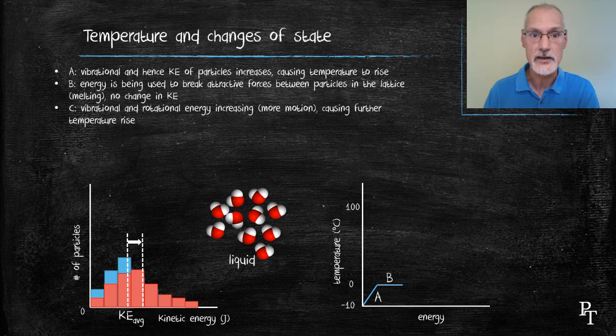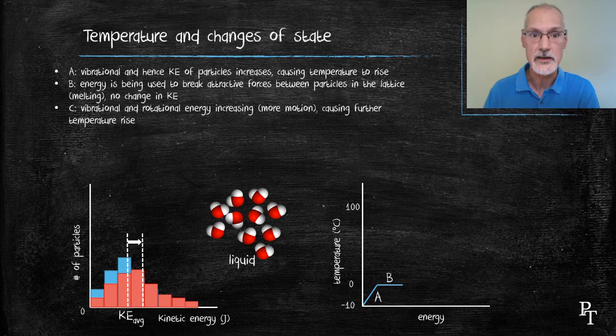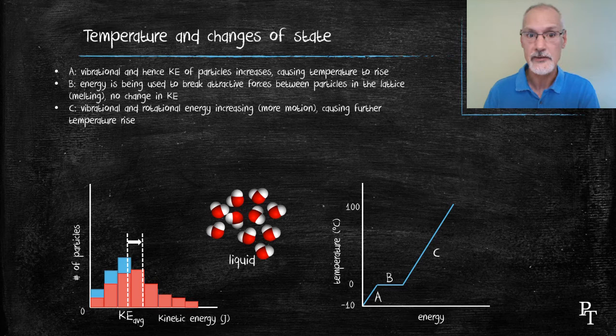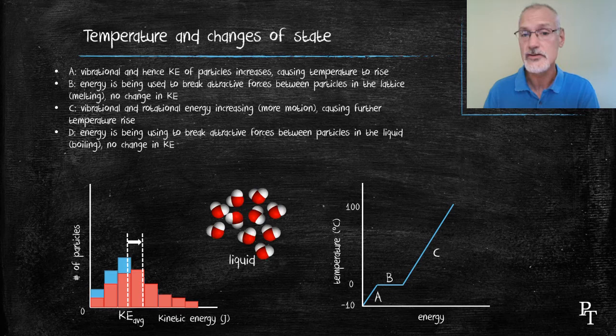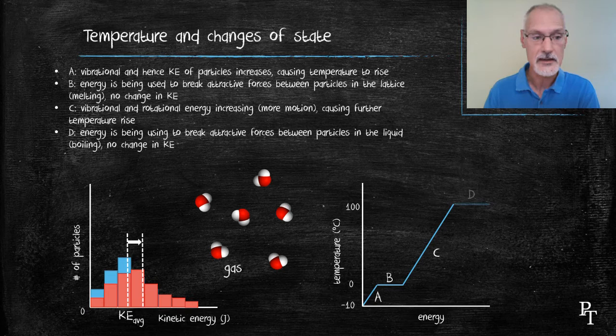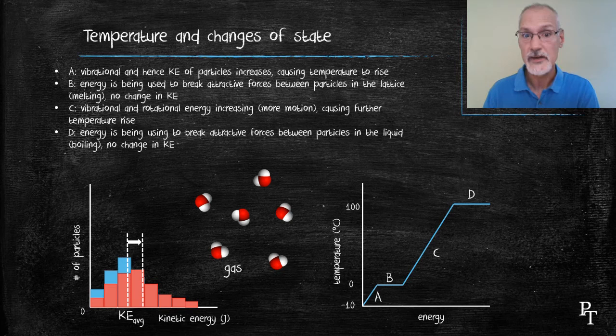Once I've melted the substance, then they can proceed to vibrate and rotate more quickly. And now I lead to a further increase in temperature until I get to 100 degrees Celsius. At that point again, I need to break the bonds that exist between the particles in the liquid. There's no further increase in kinetic energy during this stage, but there is the breaking of the bonds within the liquid. And that then results again in another plateau that occurs at 100.